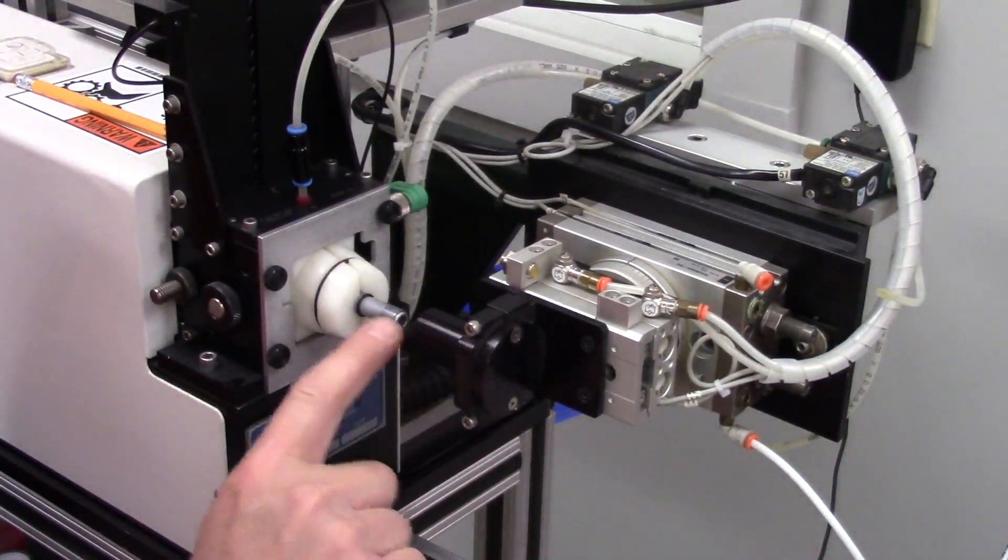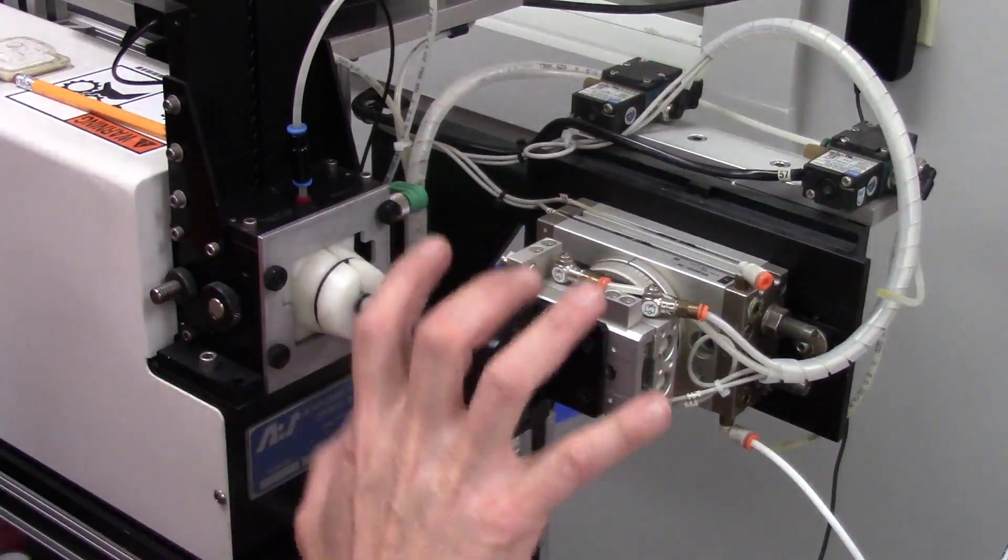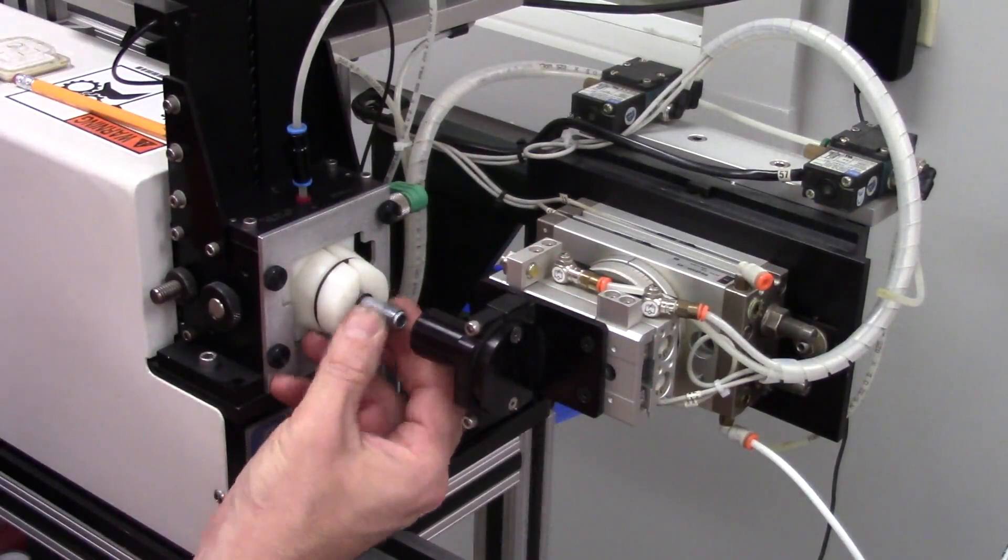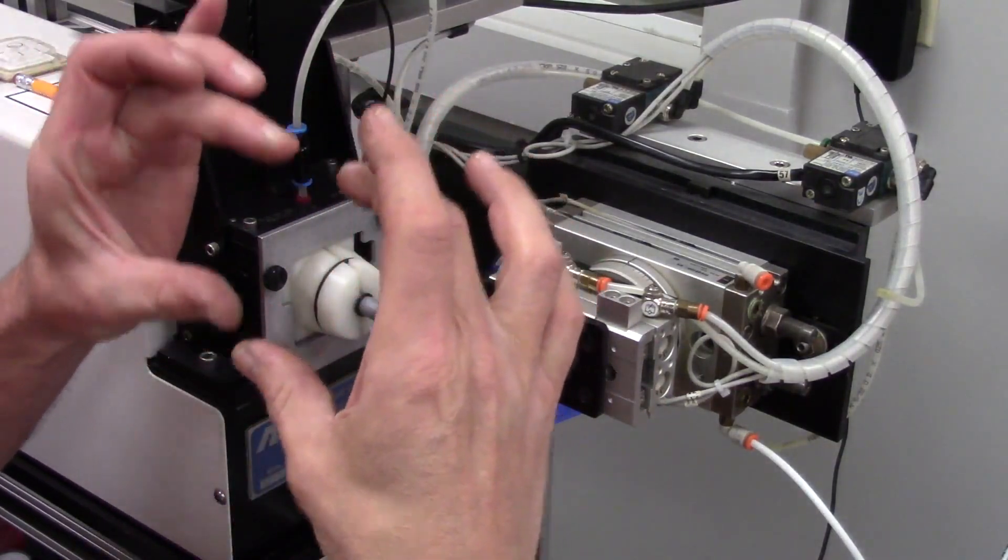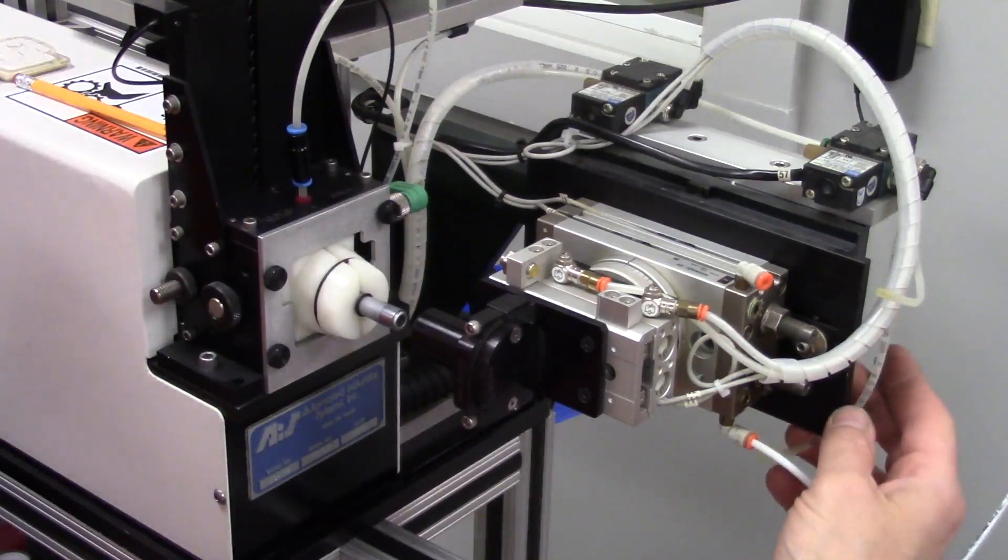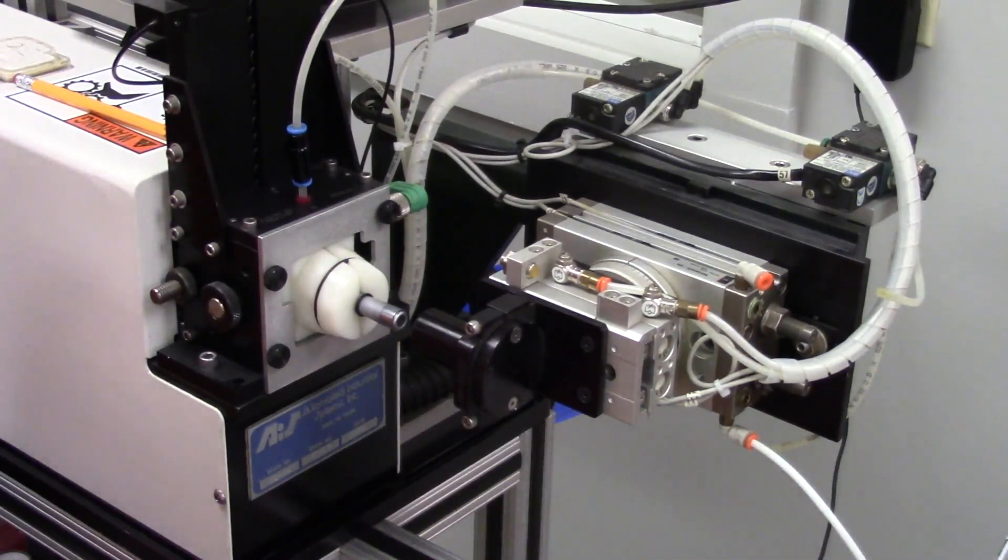We're going to align the height of this VPM tooling to the mandrel. Right now there's a slight mismatch in the height of the two. These are quarter 20, so it takes a three sixteenths Allen wrench and we're going to loosen those up.